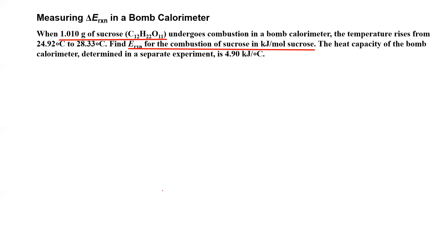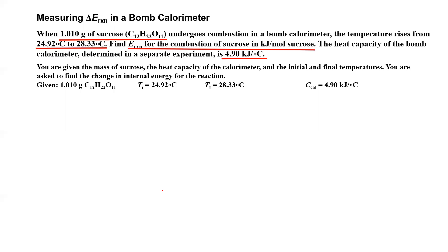How can we figure out the moles of sucrose? They tell us we're burning 1.010 grams of sucrose in this reaction. We can't measure the temperature changes of the sucrose directly, so we do it by measuring the temperature changes in the bomb calorimeter — the surroundings. The temperature rises, which makes sense because it's absorbing heat from the reaction. Now we have a temperature change in the bomb calorimeter, and we need the heat capacity of the bomb calorimeter. No one expects you to memorize heat capacities — they will be provided. It's given here as 4.90 kilojoules per degree Celsius.